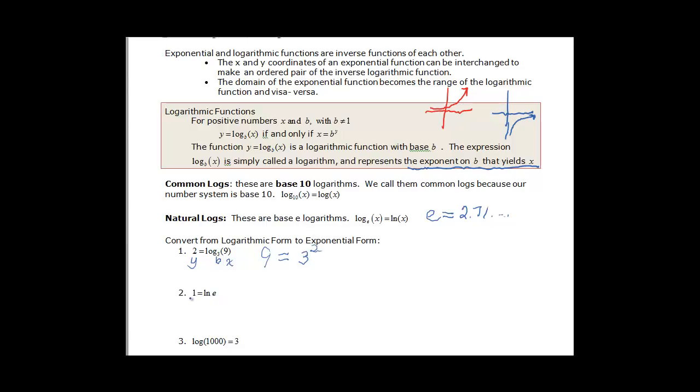ln e is equal to 1. This is one of those natural logs. So it's an assumed base e. So don't think that this is your base—it is, but it's also what's called the argument. So this is going to be y. And this is x. And then b is going to be e because it's a natural log. So we have e to the y which is 1 is equal to x which is e. And you can see that that's definitely true.